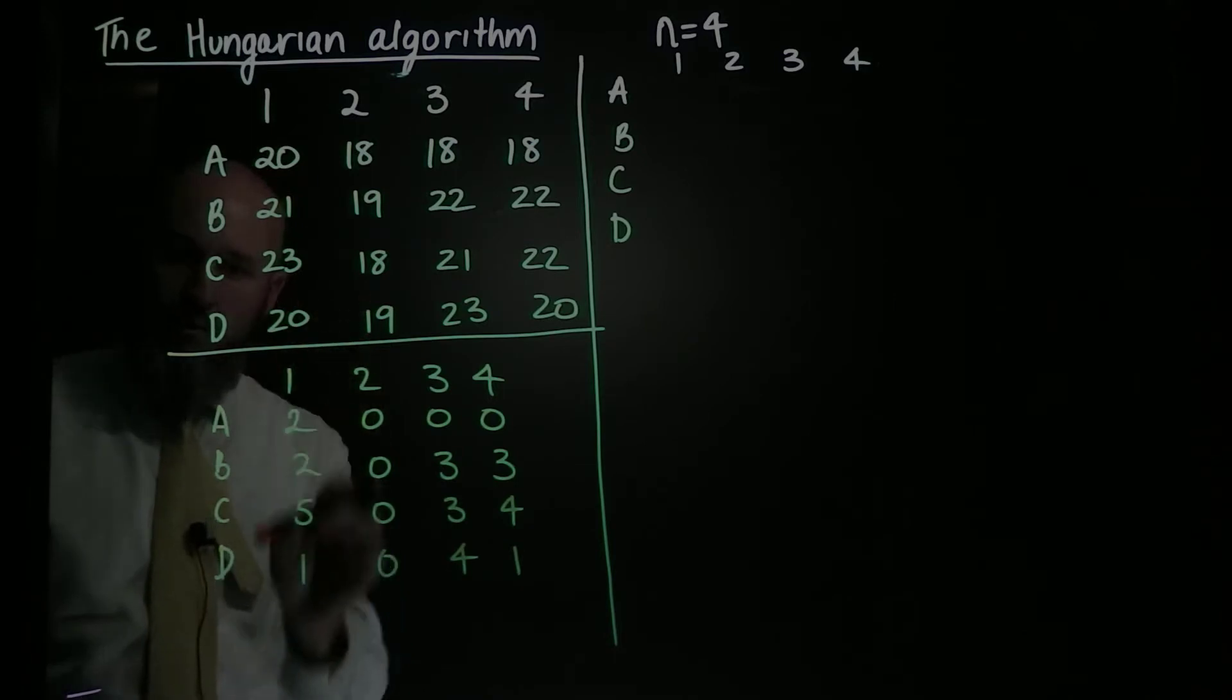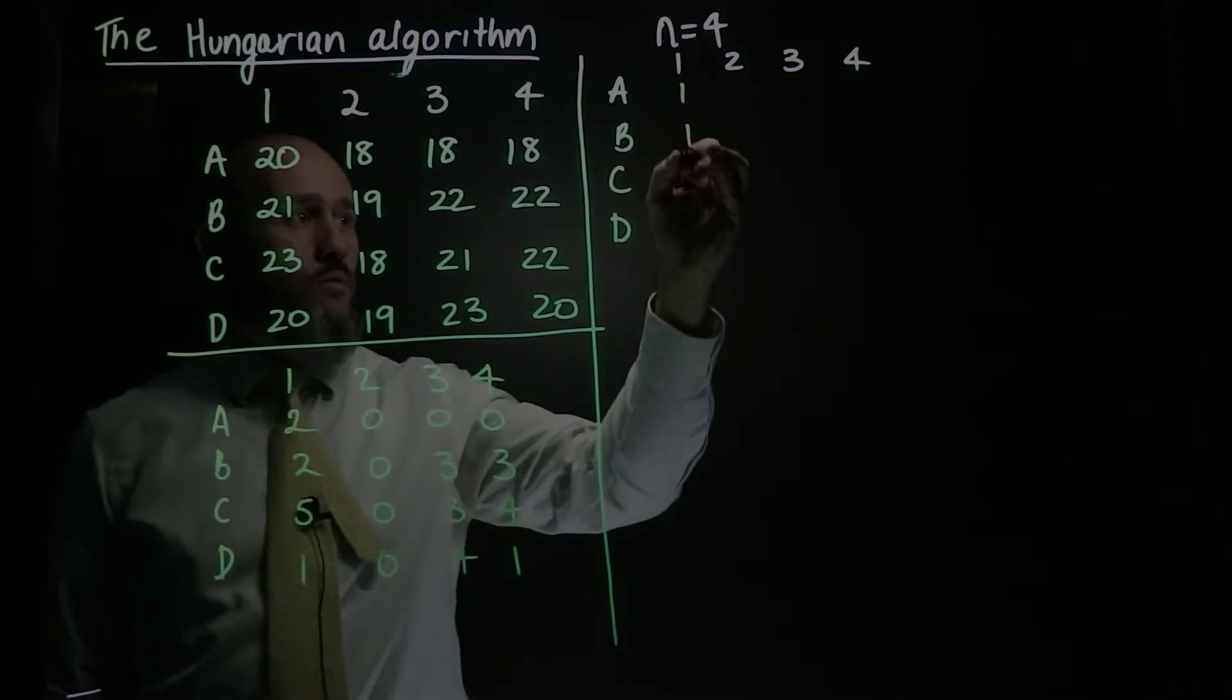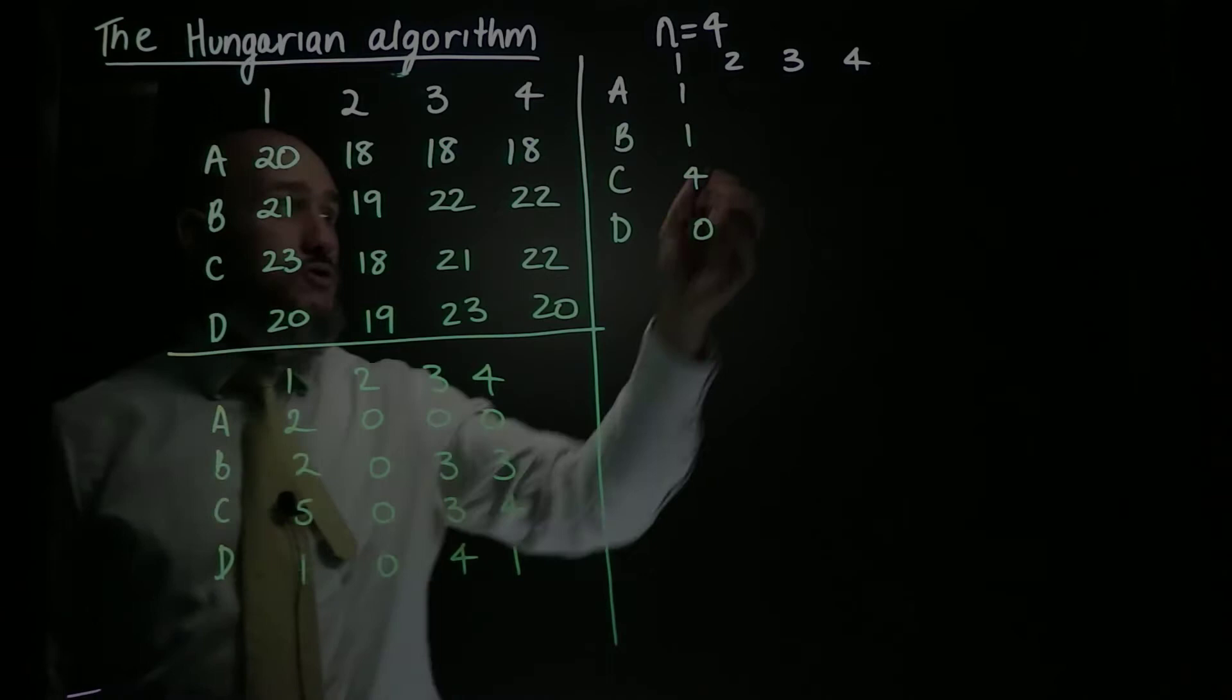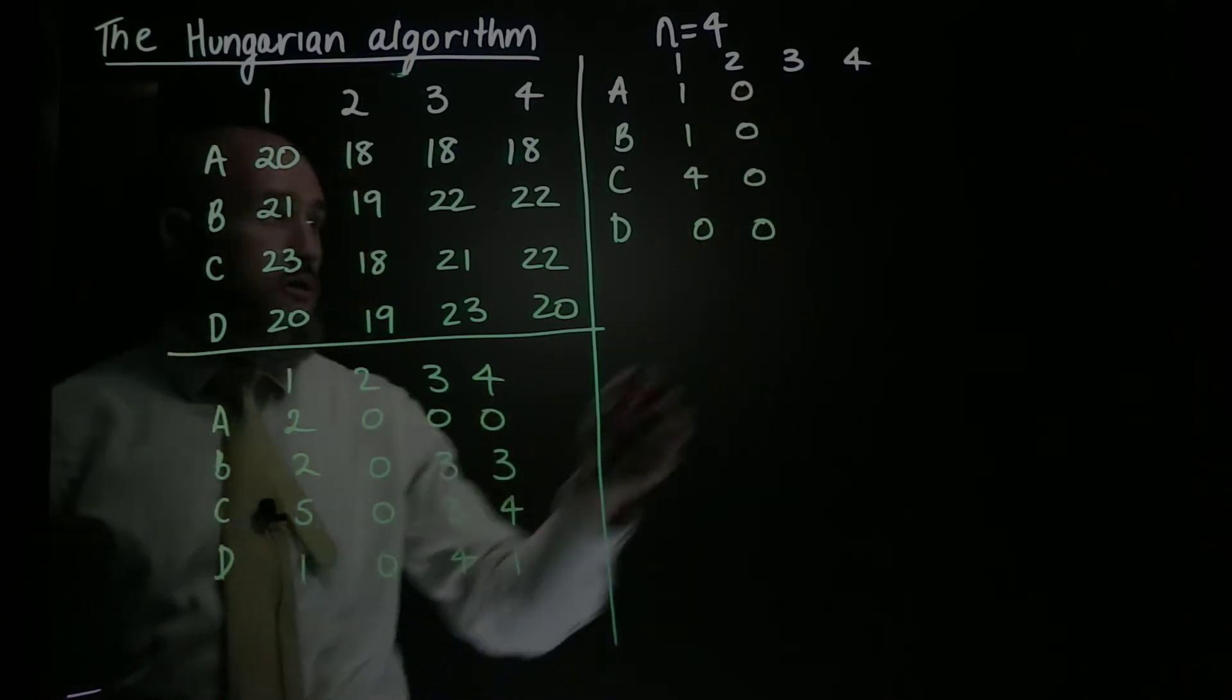So first I look at column 1, and I'll reduce it by the lowest value, which is 1. So each of them gets reduced by 1, giving me 1, 1, 4, 0. There's a whole bunch of zeros in column 2, so that just stays as 0, 0, 0, 0.